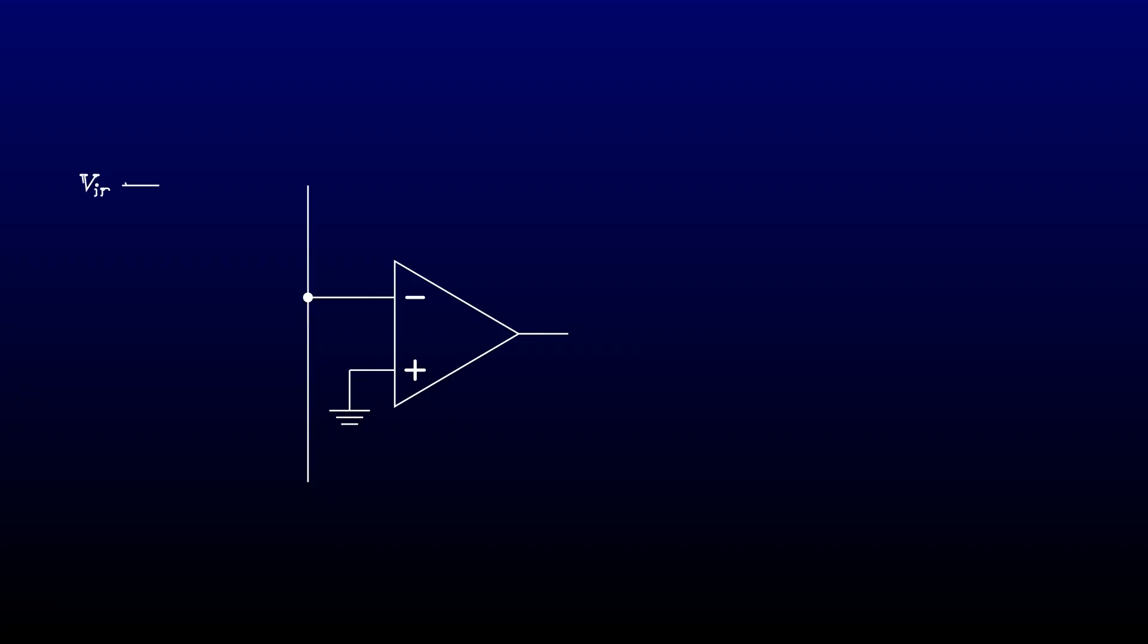The easiest way to do that is to use an inverting configuration for the op-amp and use a second diode to limit the negative voltage swing. The circuit looks like this.